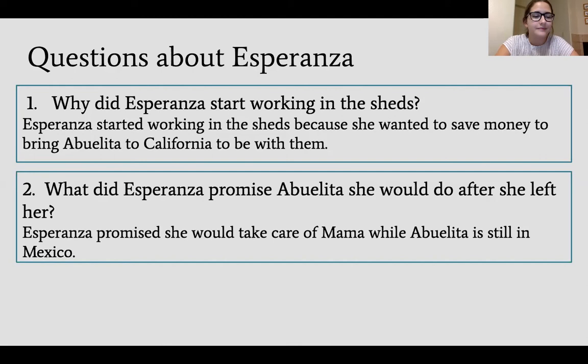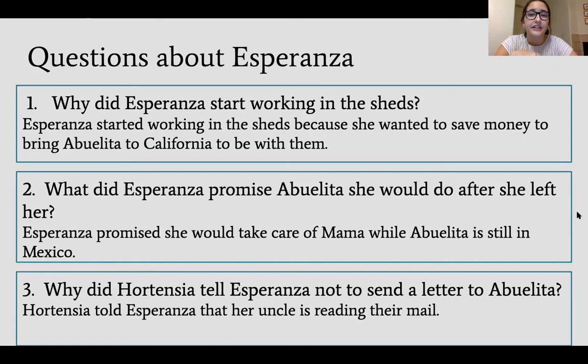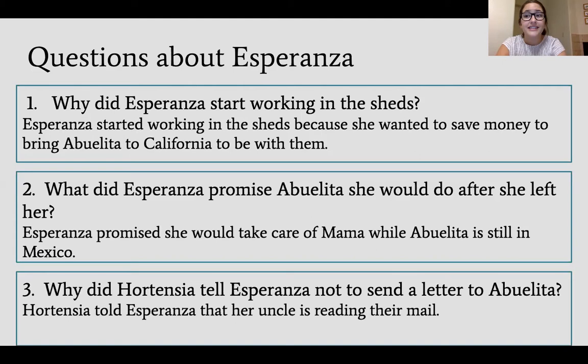For the last question — why did Horsenia tell Esperanza not to send a letter to Abuelita? Horsenia told Esperanza that her uncle was reading their mail. The reason is that the uncle doesn't know they escaped to California. If Esperanza sent a letter from California to Abuelita, the uncle might read it and be able to find them. That's not what they want, because it took a lot for them to go to California to get new jobs and be safe.